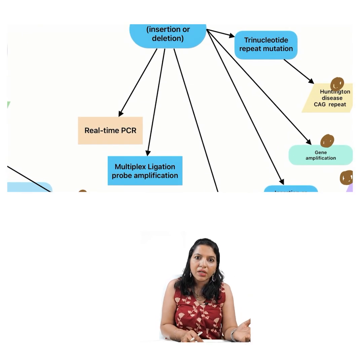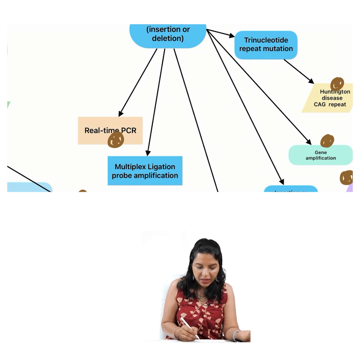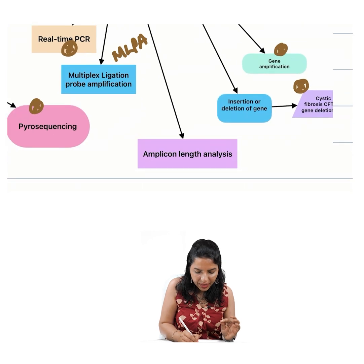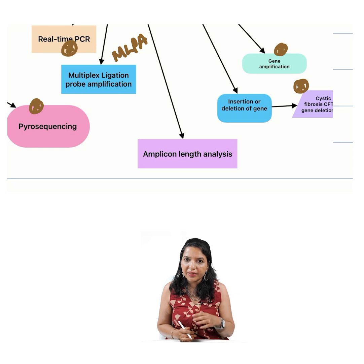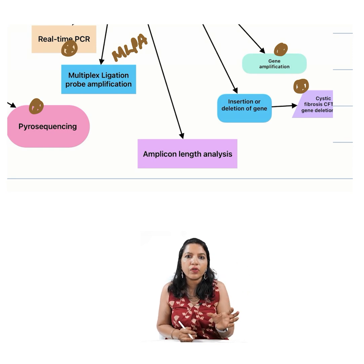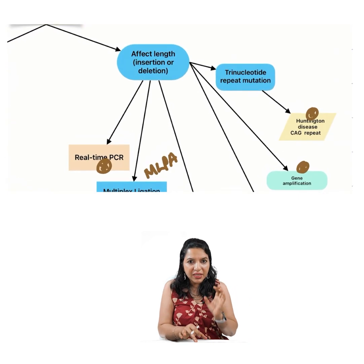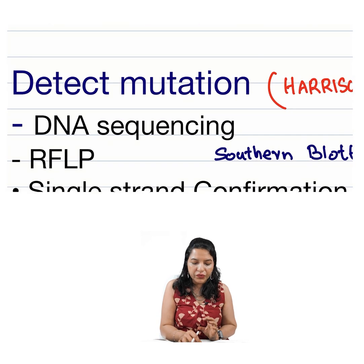One is we can use real-time PCR, because this is a quantitative PCR where gene dosage can be detected. So real-time PCR, QF-PCR, or QPCR, then multiplex ligation probe amplification — otherwise MLPA. Another technique is amplicon length analysis: it is like PCR, and after PCR we analyze the length of the amplicon. These are the various techniques to detect insertion or deletion, or something which affects the length of the DNA.